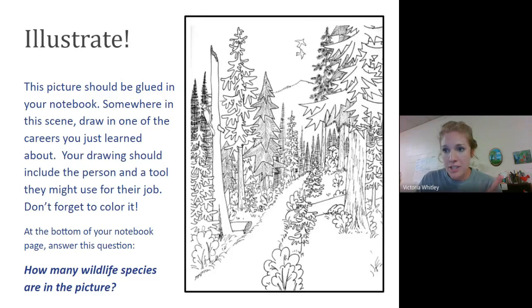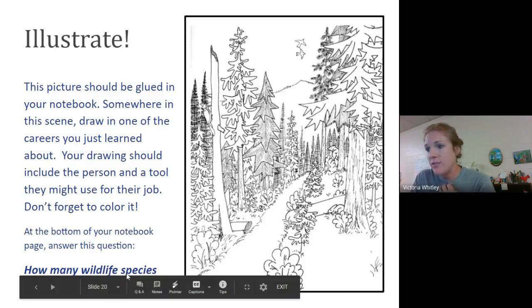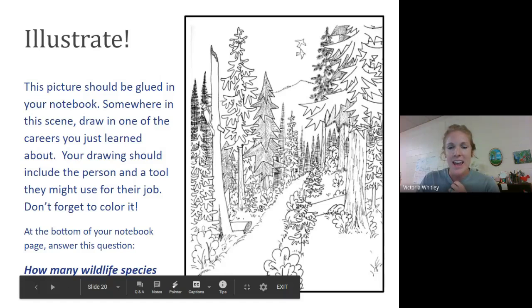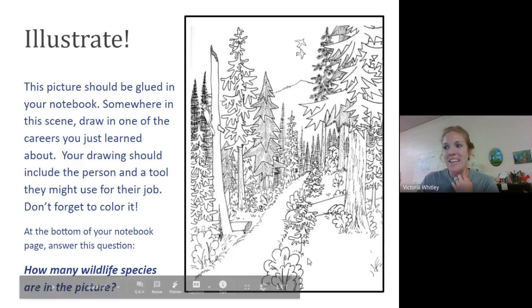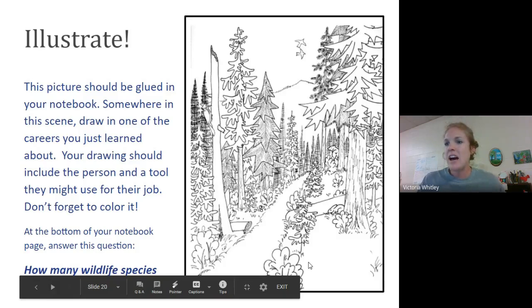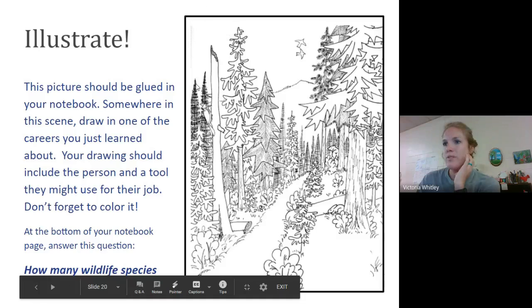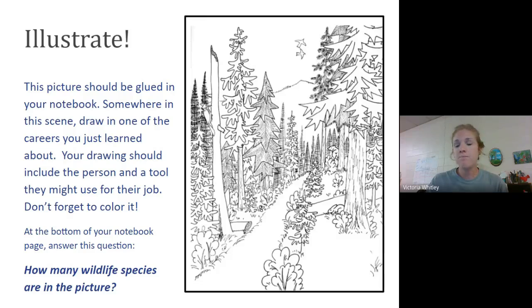If you draw a timber cruiser in this, you also need to draw like him using a Biltmore stick. So the career and the tool. I'm looking for both things. Extra credit question, just for fun. How many wildlife can you find in the picture? So there are lots of hidden wildlife in this coloring page. And I want to see how many of you guys can identify because there's a lot hidden. So we use it as like a Where's Waldo type thing. So draw the career. Draw that person. Draw their tool that they're using to do their job. And then, how many wildlife can you find? Answer that too. You can just draw it as a big number in the corner if you want to. And just like with everything else, once you do that, once it's in your notebook, you can take a picture of it. Email it to me or put it in the upload section on Canvas that I'll have there for you. But that's today's assignment. That's how we're wrapping up.